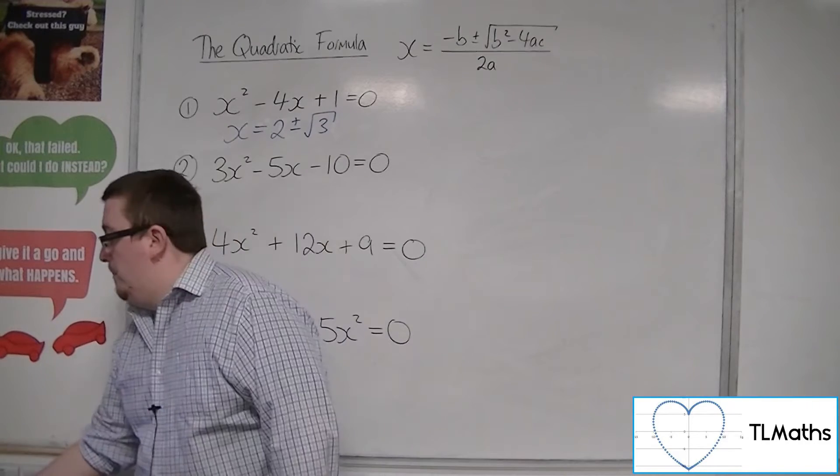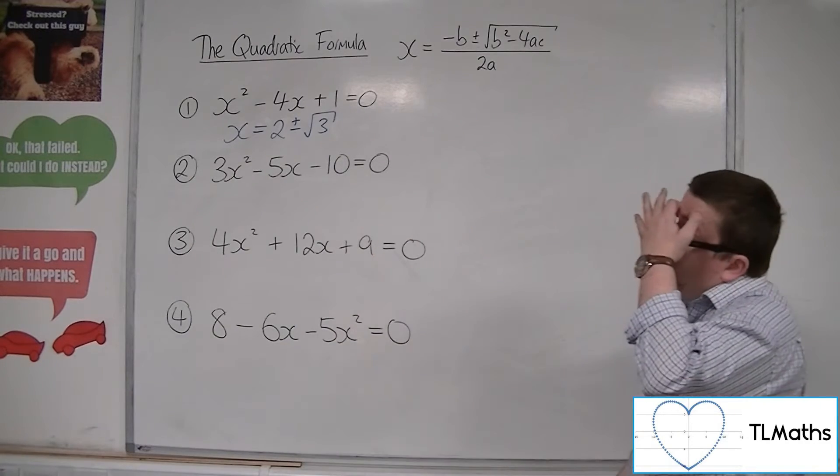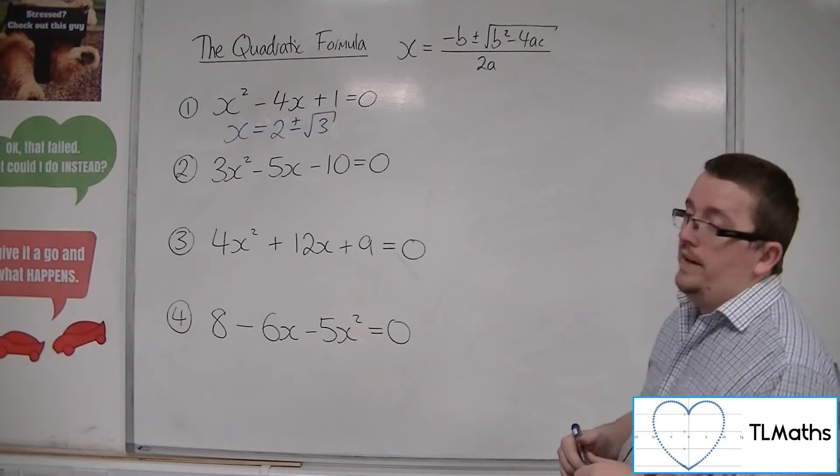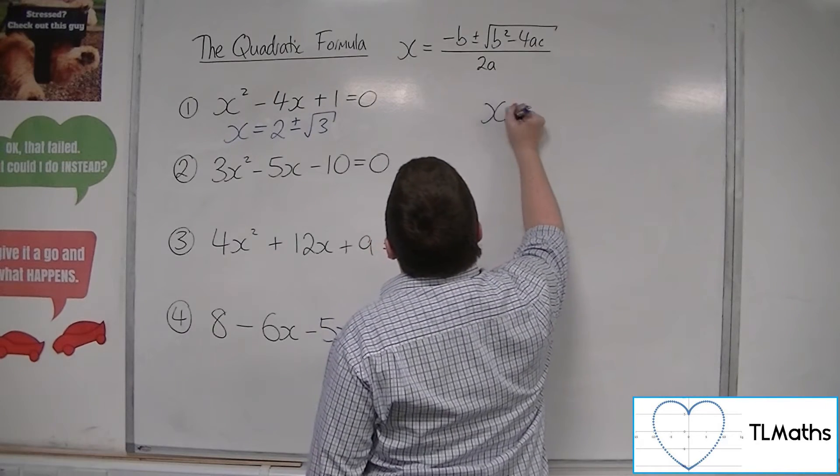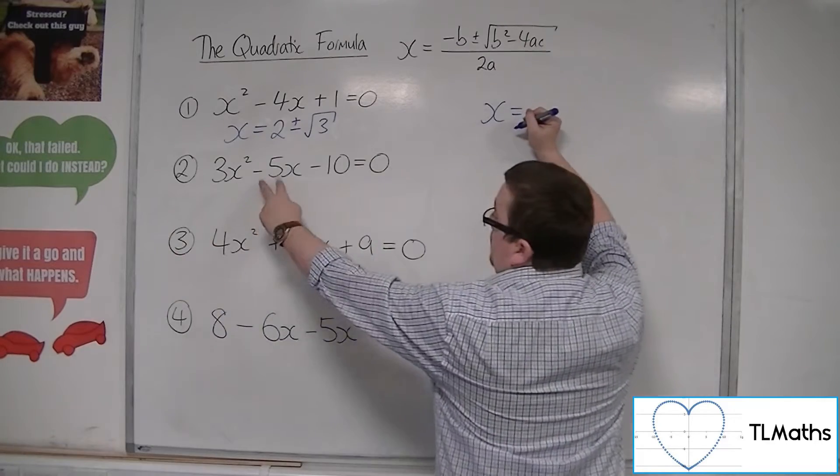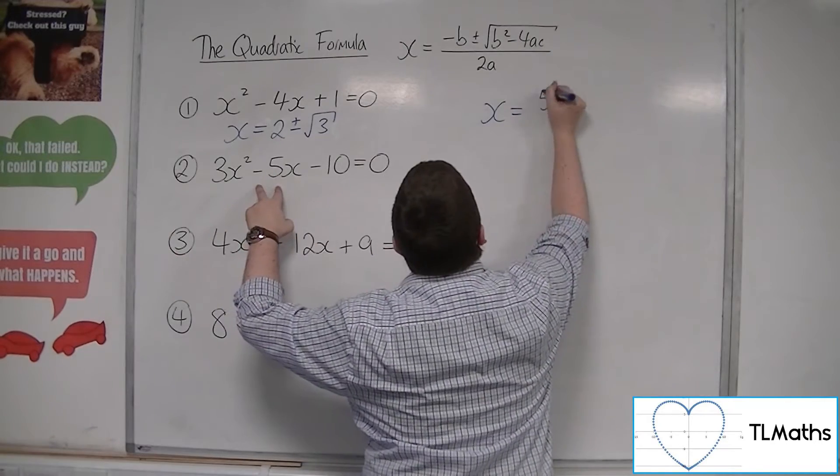Right, so for number 2, 3x squared minus 5x minus 10 equals 0. So x equals minus b, so minus minus 5, so positive 5.